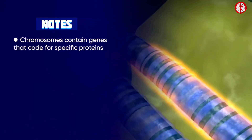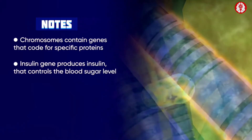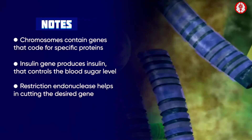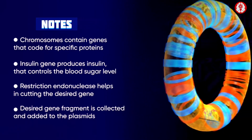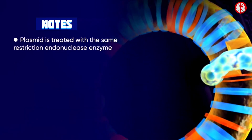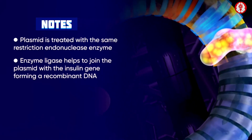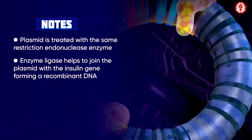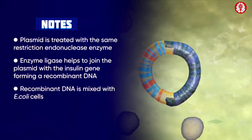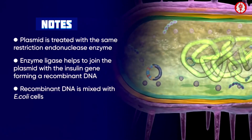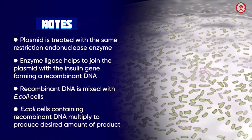In summary: chromosomes contain genes that code for specific proteins. The insulin gene, which controls blood sugar level, is treated with restriction endonuclease. The desired fragment is collected and added to plasmids. The plasmid is treated with the same enzyme, and ligase joins the plasmid with the insulin gene to form recombinant DNA. This recombinant DNA is mixed with E. coli cells and introduced into agar medium for growth, where bacterial cells divide and produce insulin.